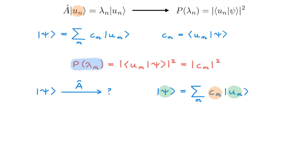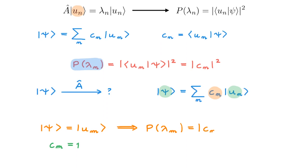An important special case is what happens if the state ψ is an eigenstate of the operator A that we're measuring, say um. This corresponds to the expansion coefficient Cm equal to 1, while all other expansion coefficients vanish. In this particular case, we do know with absolute certainty what the outcome of the measurement will be. The probability of getting λm is the absolute value squared of Cm, which is 1, so we will get λm with probability 1.